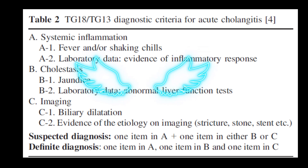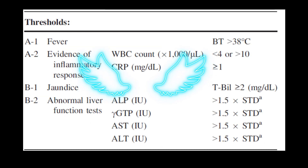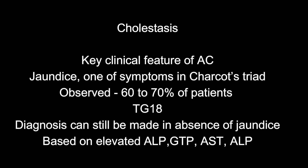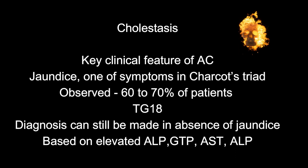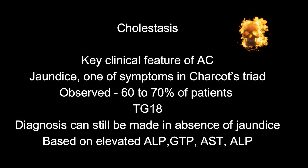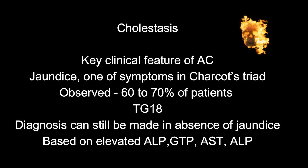For fever, the patient should have a temperature of more than 38°C, or WBC count less than 4,000 or more than 10,000, or CRP more than 1 mg/dL. A patient is considered jaundiced if bilirubin is more than 2 mg/dL or there are abnormal liver function tests — ALP, GGT, AST, or ALT — more than 1.5 times the upper limit of normal. Cholestasis, that is jaundice, is the key clinical feature of acute cholangitis and is observed in 60–70% of patients. Importantly, as per Tokyo Guidelines 2018, the diagnosis of acute cholangitis can still be made in the absence of jaundice based on elevated ALP, GGT, AST, or ALT. The presence of jaundice is not a mandatory feature for diagnosing acute cholangitis.